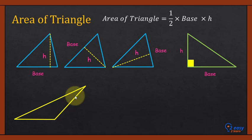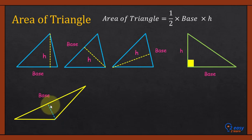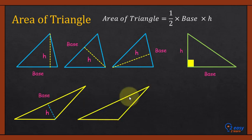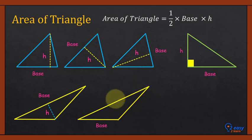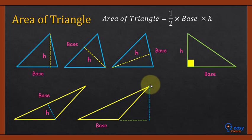Now I have shown you an obtuse angle triangle. If I select one line as the base, the opposite corner gives us a perpendicular which we draw to find the height. But if I select the horizontal line as the base, the opposite corner is outside the base line. Therefore, we extend the base line as a guide line. We draw a perpendicular from that point to the guide line, and that perpendicular becomes the height of the triangle.